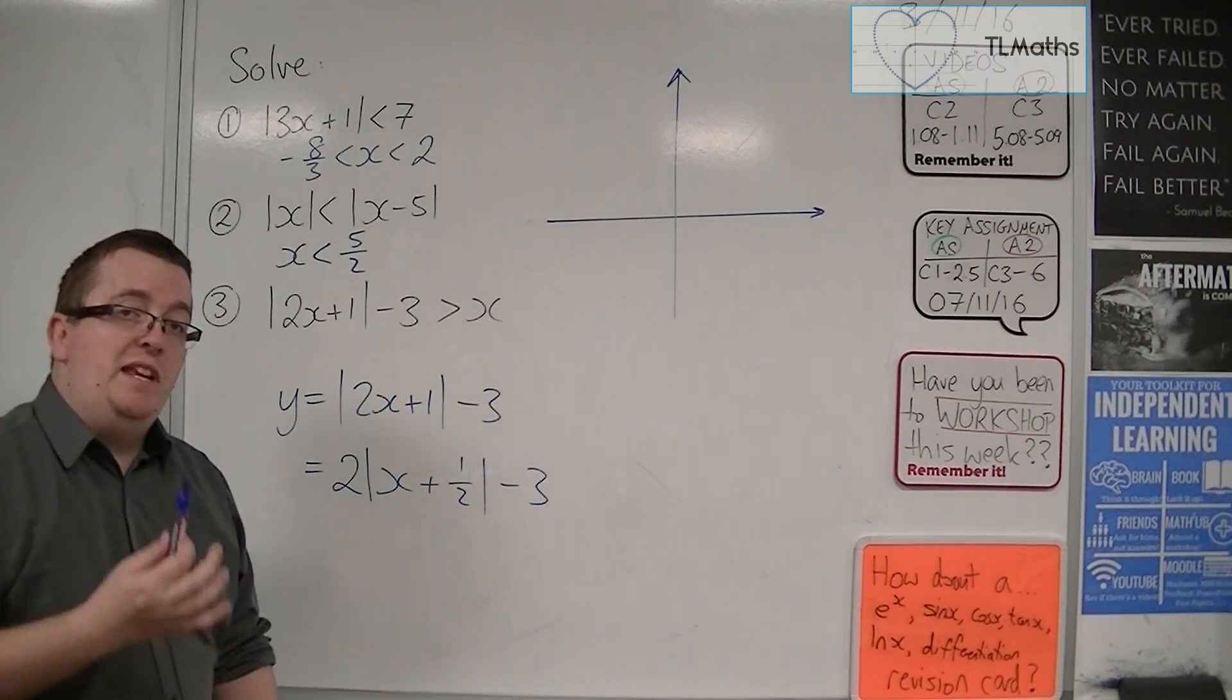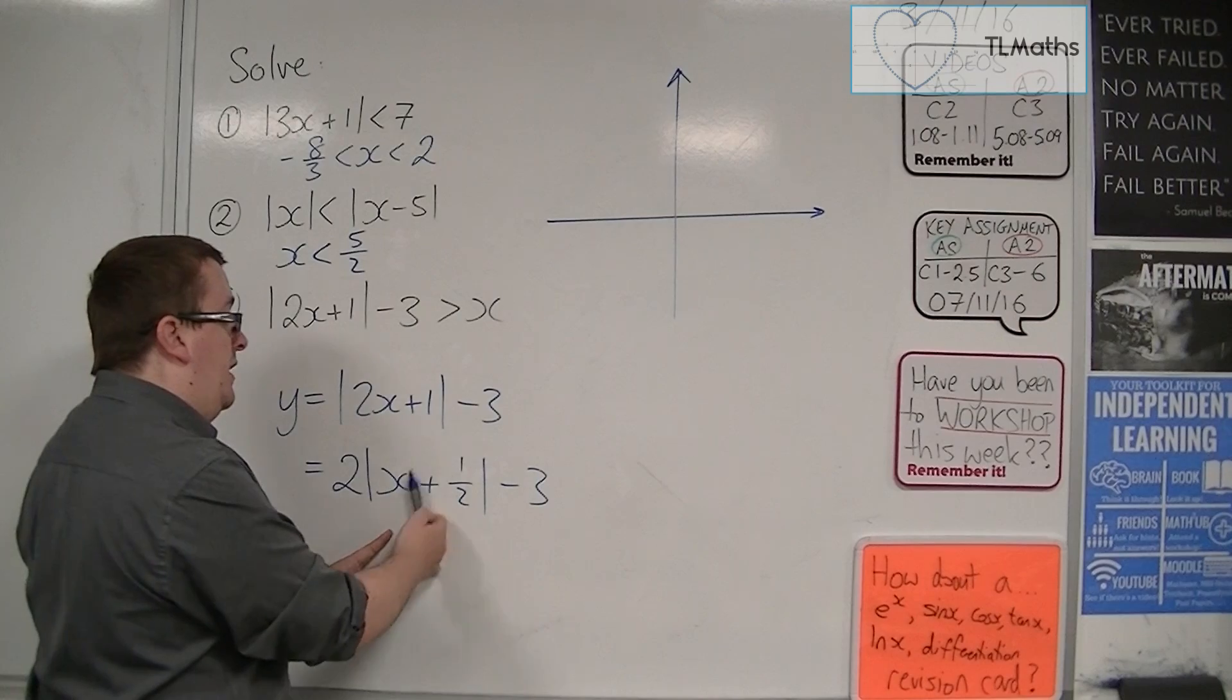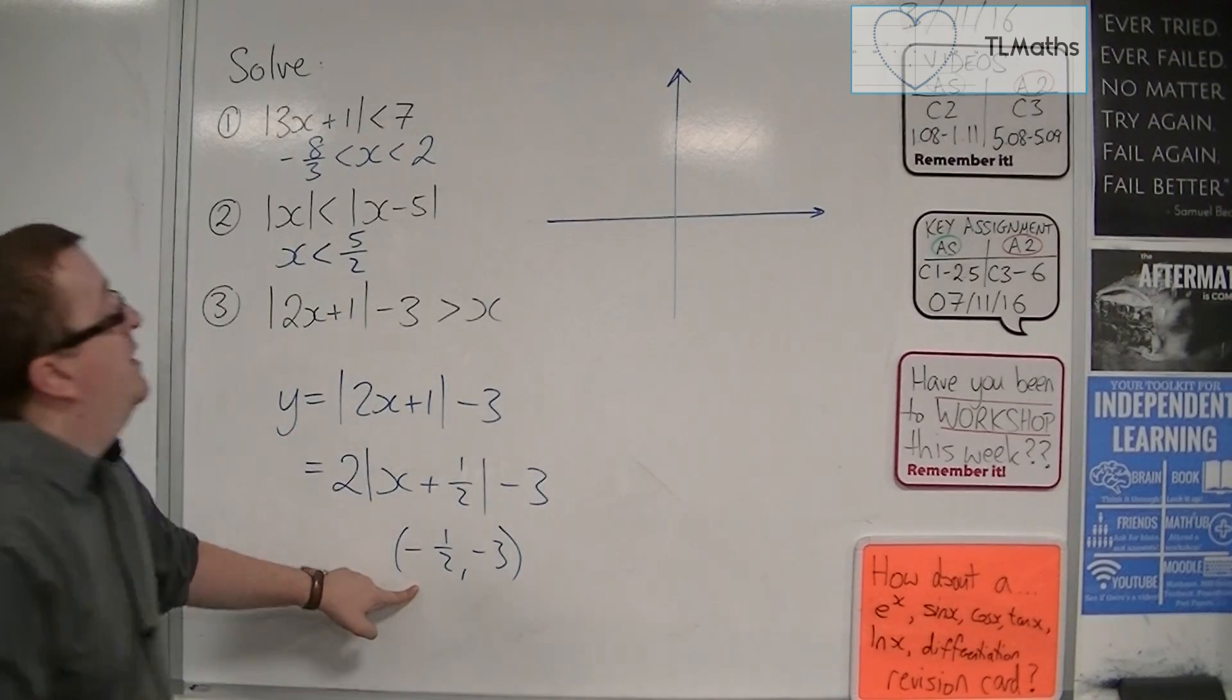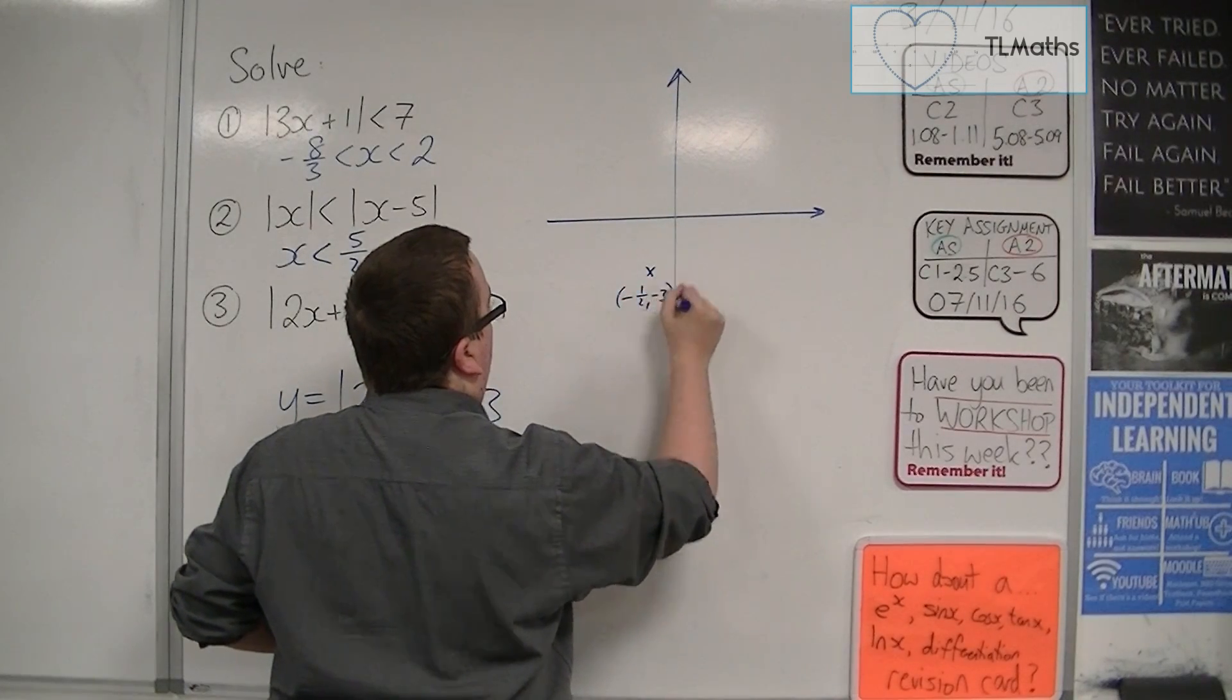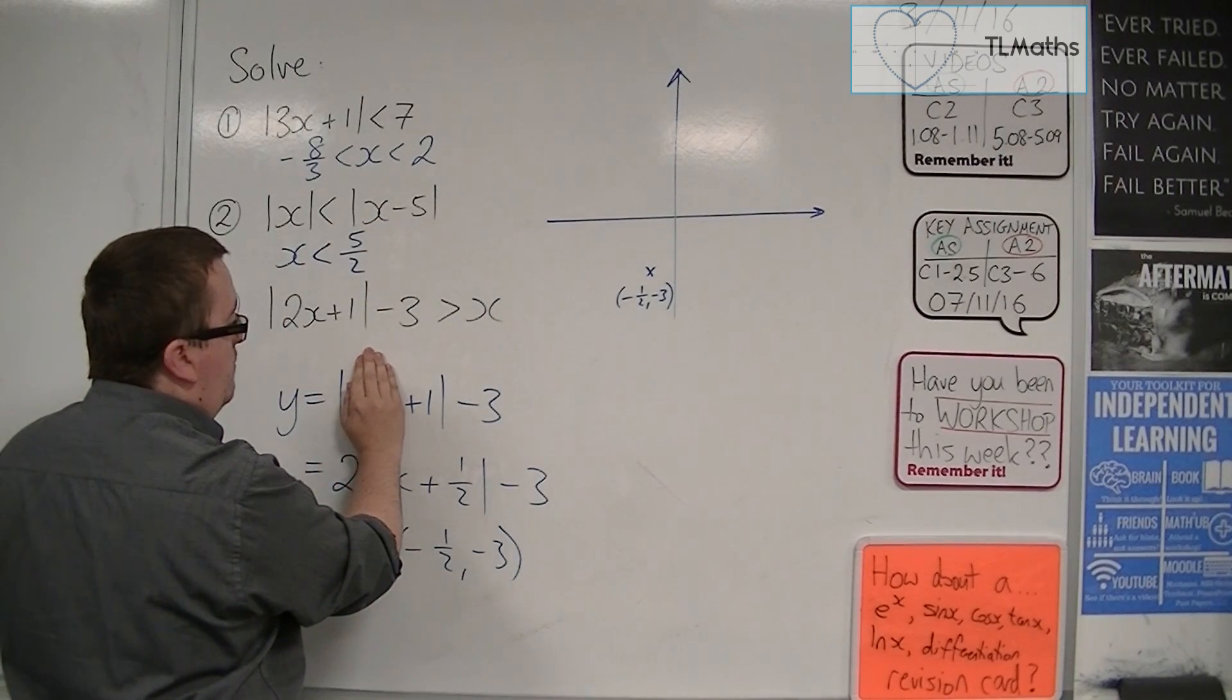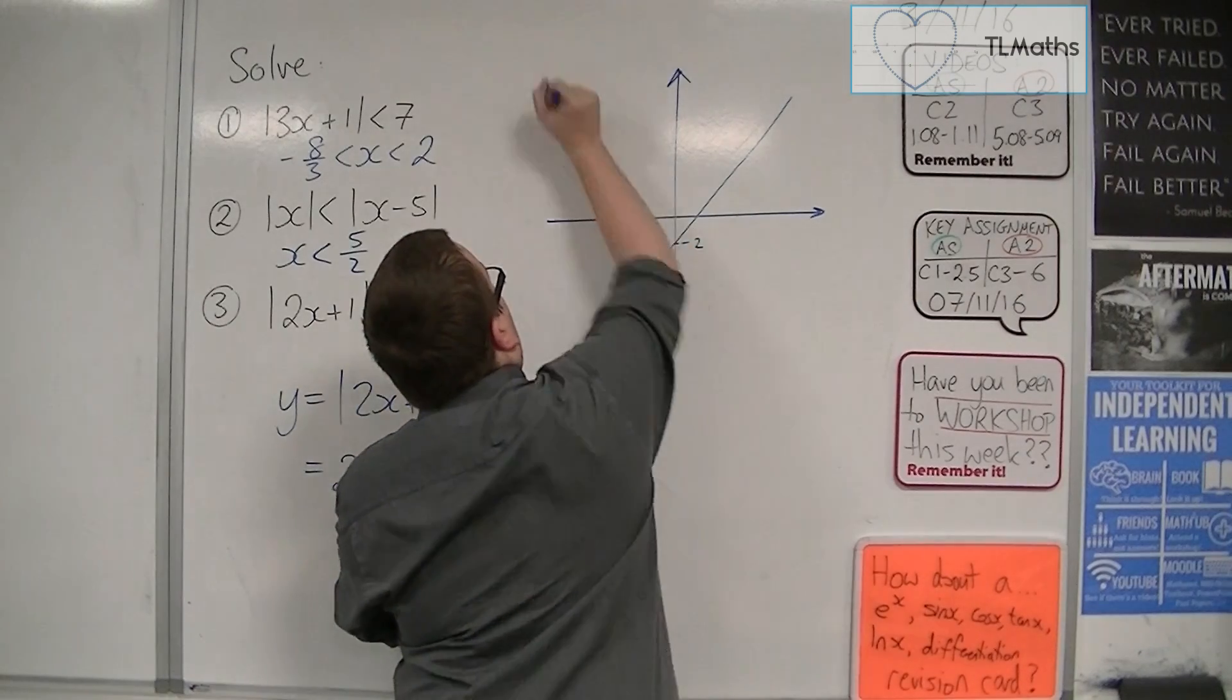Now, this tells me precisely where the vertex is. So it gives me an idea of where the graph sits. The graph has a vertex at minus 1 half, minus 3. So I used to draw a modulus like this. So minus 1 half, minus 3. So that would be down here somewhere, wouldn't it? Now, it's going to be crossing through the y-axis when x is 0. So that will get me modulus of 1, take away 3, so minus 2. So it's going to be crossing through the y-axis at minus 2. It's going to look something like that.